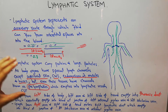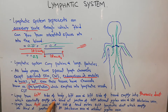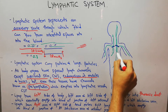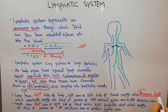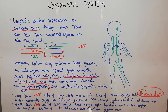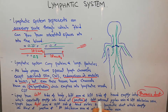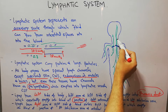The lymphatic system empties back into the blood at specific locations. Lymph from the left side of the body — the left arm and left side of the head and neck — empties into the thoracic duct, which eventually empties into the blood at the junction of the left internal jugular vein and the left subclavian vein.